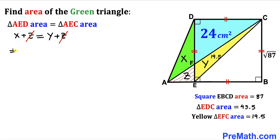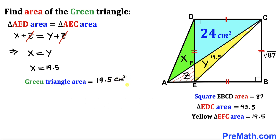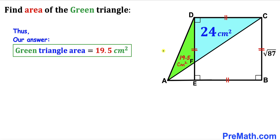Therefore X equals Y, and we know Y is 19.5. So X equals 19.5 centimeters square. Since X represents the area of the green triangle AFD, the area of green triangle AFD turns out to be 19.5 centimeters square. That is our final answer.